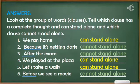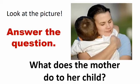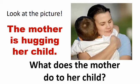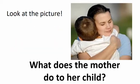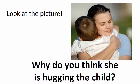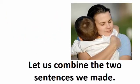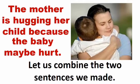So let's get started. Now look at the picture. What does the mother do to her child? From the picture, we can say that the mother is hugging her child. Why do you think she is hugging the child? An answer would be: because the baby may be hurt. Now let us combine the two sentences we made.